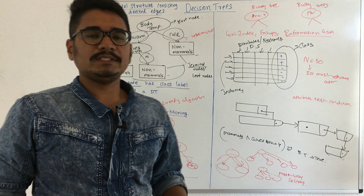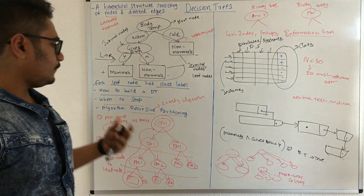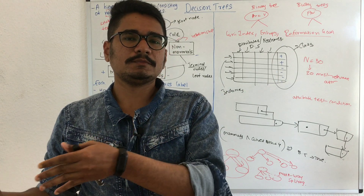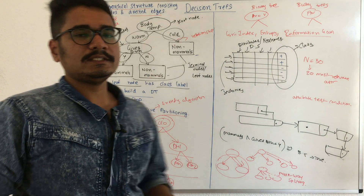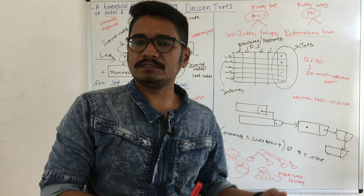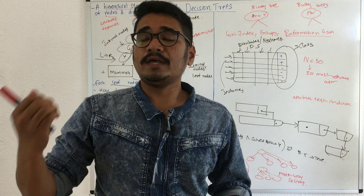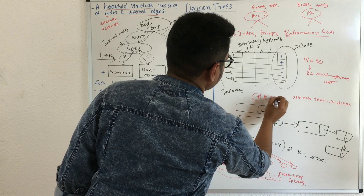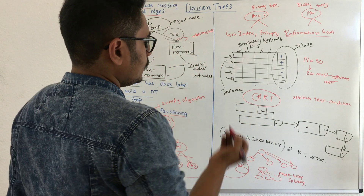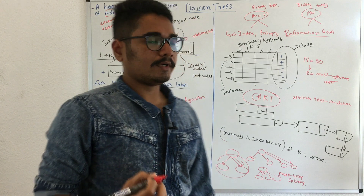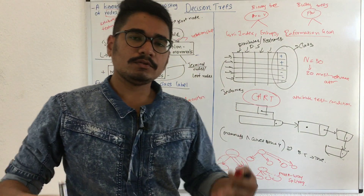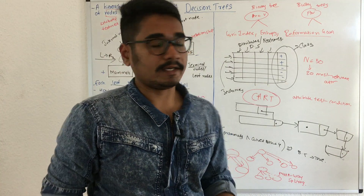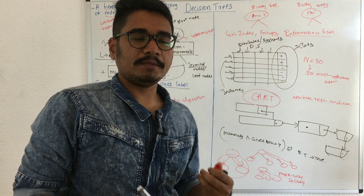Looking at the advantages: unlike naive Bayes, which focuses mainly on categorical data, decision trees work well for both classification and regression, and handle both categorical and numerical data. This is why they are sometimes called CART — Classification and Regression Trees. Also, unlike KNN, decision trees provide pictorial representations that let you visualize your data.